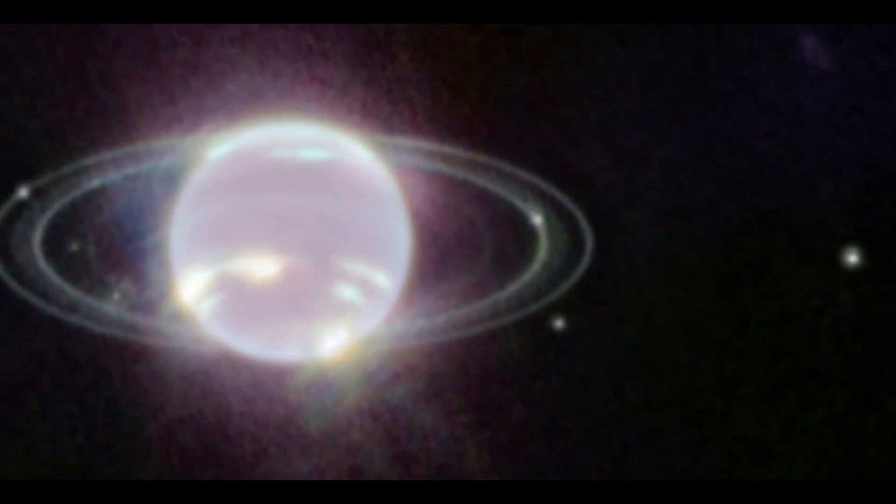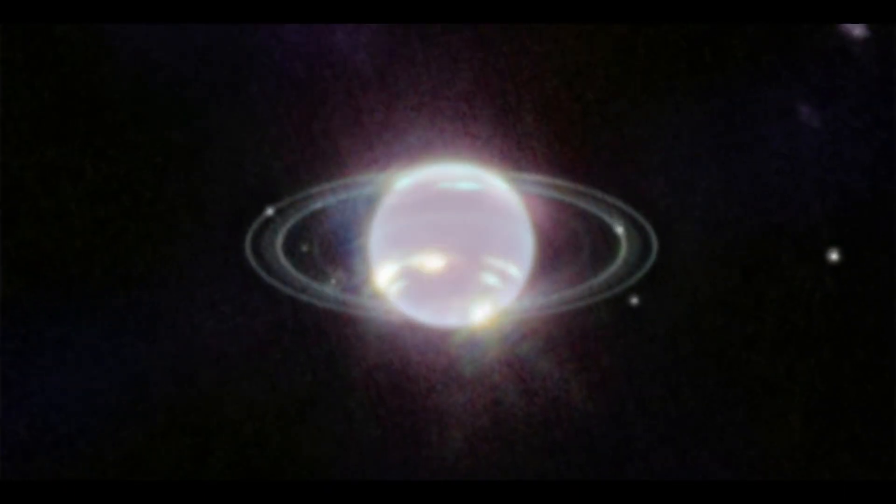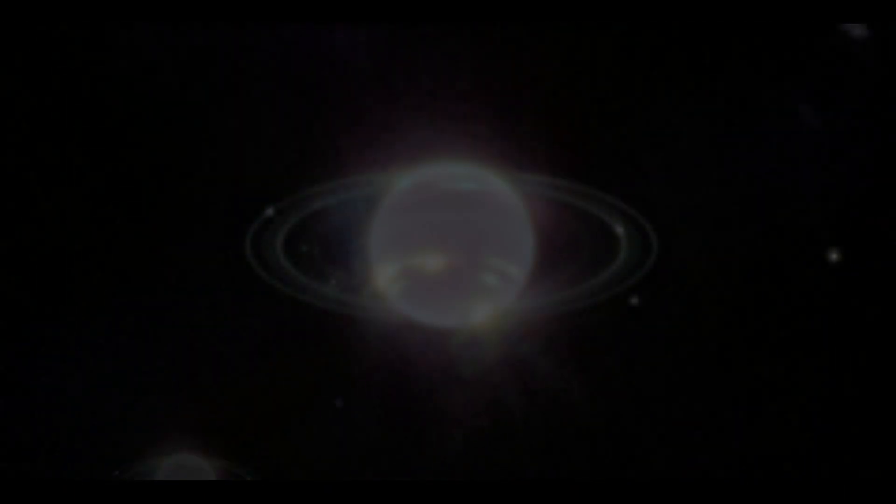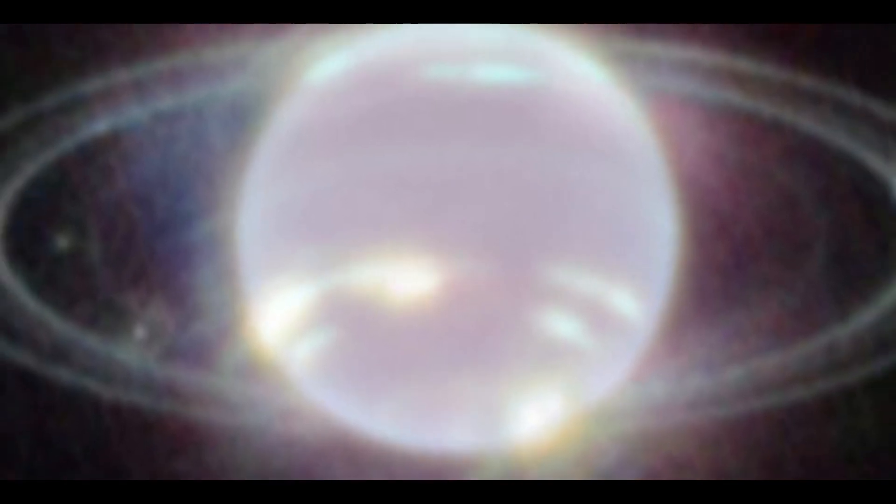The new James Webb Space Telescope image, in addition to the previously known bright, narrow Neptunian rings, also shows some fainter dust rings around Neptune that even Voyager 2's up-close-and-personal visit to the planet in 1989 couldn't reveal, rings that scientists have never seen before.